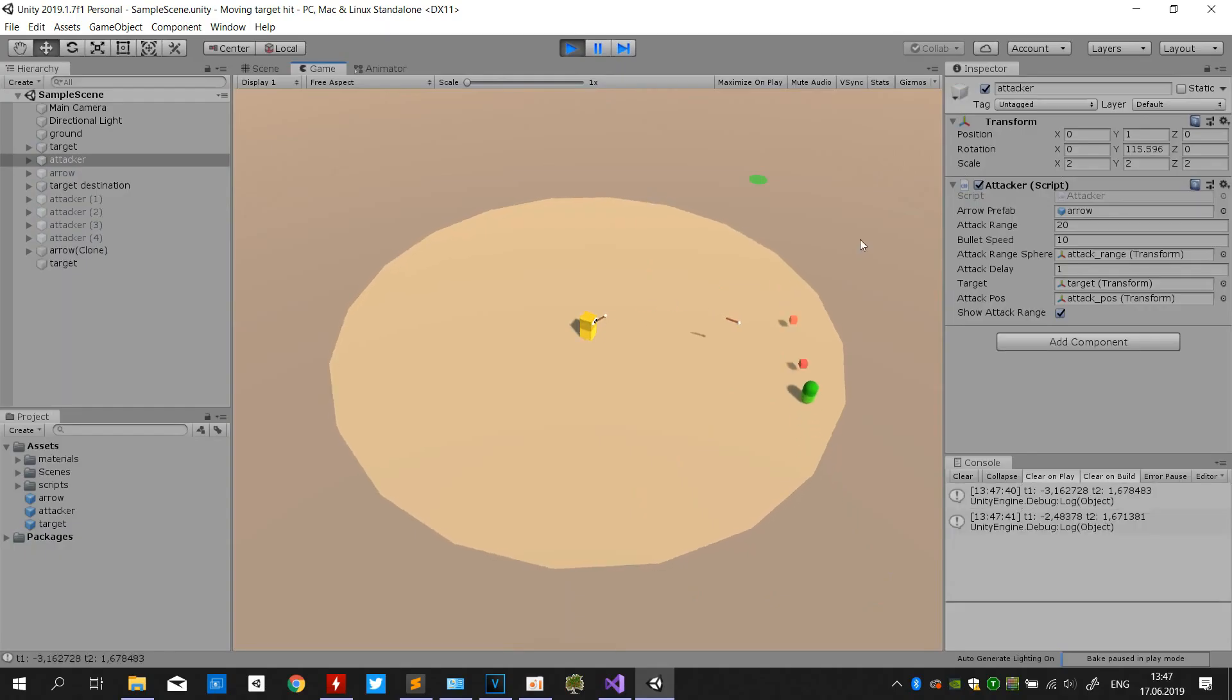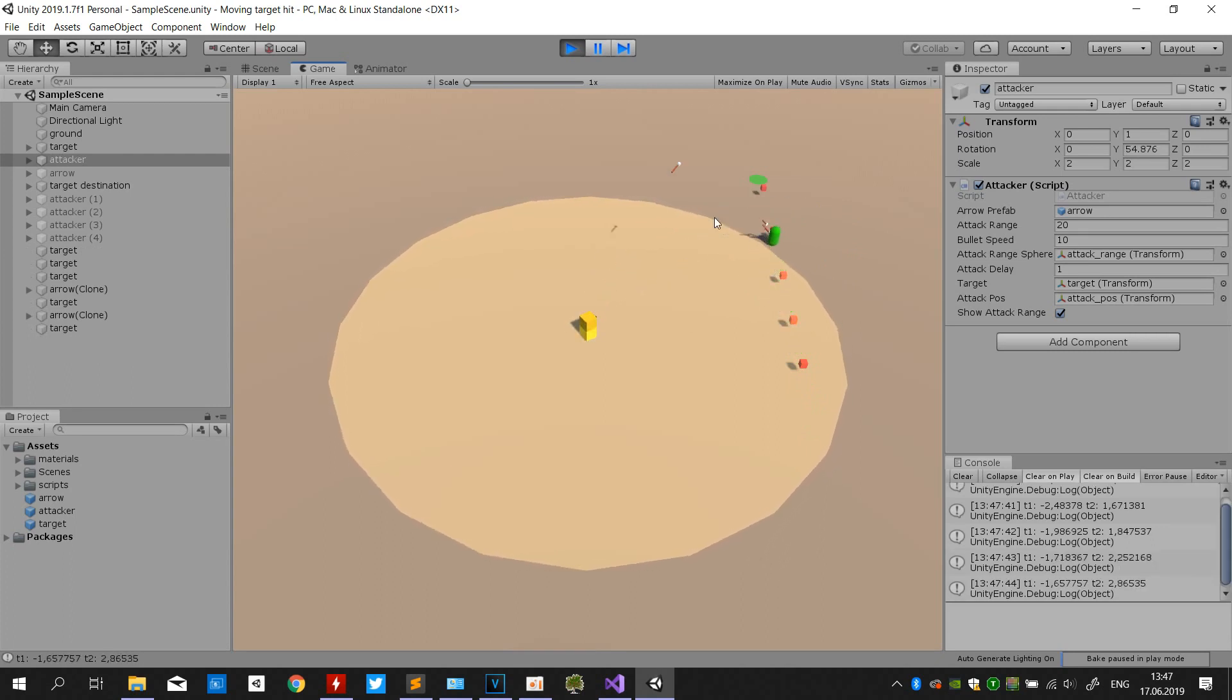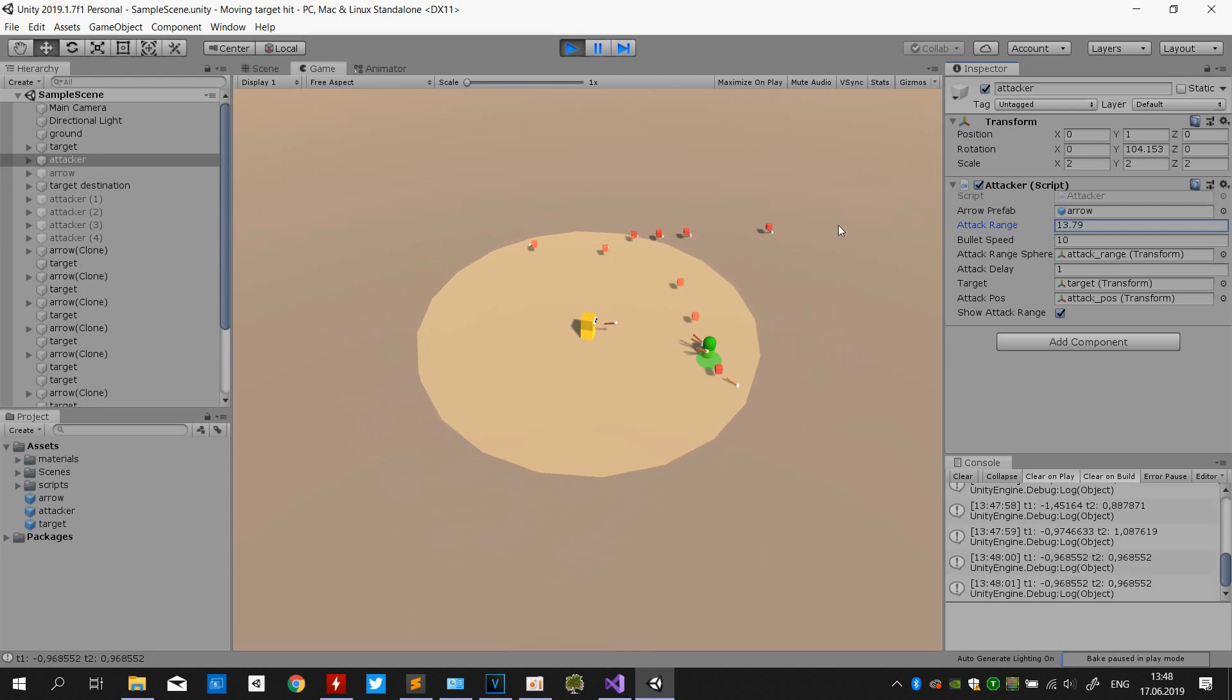So here's the demo, yellow cube is attacker and green cube is target. You can point and click to move target. Small red cubes are arrows intersections with target position. You can change attacker range and arrow speed. Just play around with values and see how it works.